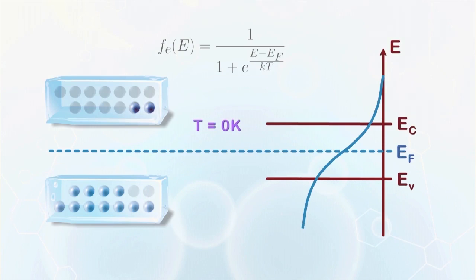At 0K, all electrons stay below EF, or EV as there are no states in the bandgap. Above 0K, electrons have a finite probability of staying in the conduction band.